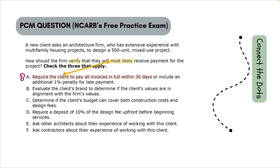Option A says: require the client to pay all invoices in full within 30 days, or include an additional 1% penalty for late payment. This sounds like a very definitive tool to make sure you are going to get what you are owed as an architect — typical contract language covering invoice timing and late payment penalties. I put a question mark because I'm not sure it meets the criteria, since the question says 'most likely to receive.'